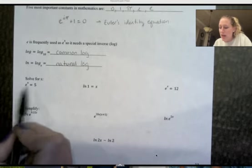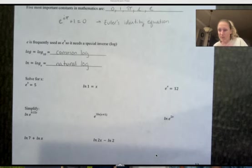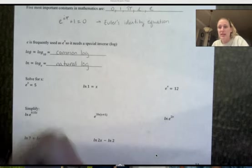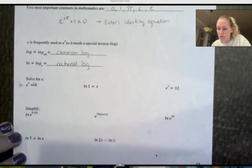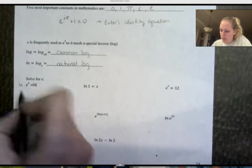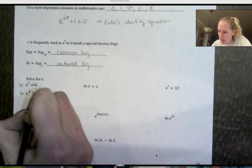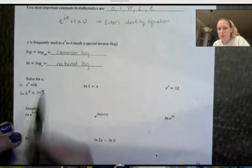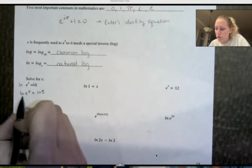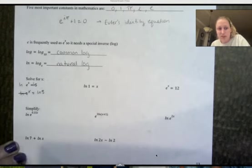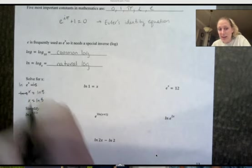So if I want to get x by itself, I need to get rid of e. To get rid of anything, we're going to apply its inverse. So the inverse of e is natural log, and just like any algebra equation, whatever I do to one side, I have to do to the other. So I'm taking natural log of e to the x, and natural log of 5. Natural log and e are inverses, they're going to cancel. So I have x equals natural log of 5.